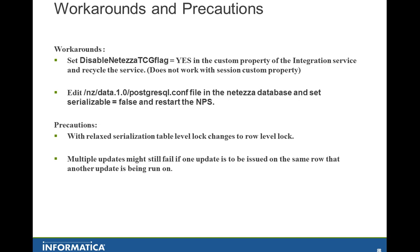This is a typical case where you have both SCD1 and SCD2 implemented in the same mapping — you might encounter errors even after setting all these flags due to how the Netezza database works. In that case, you may want to retain your SCD2 pipeline with insert with ignore key constraints and then an update to update the previous row, and create a new pipeline to implement SCD1 separately.